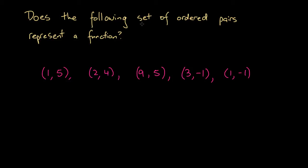Does the following set of ordered pairs represent a function? Below we've got a set of ordered pairs — a collection of statements between brackets that have a first number and then a second number. We've got 1 and 5, then 2 and 4, 9 and 5, 3 and negative 1, and 1 and negative 1.